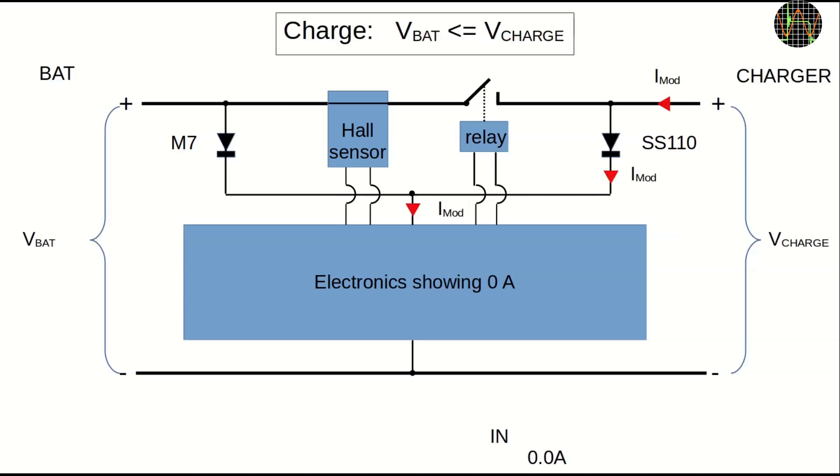In charge mode with the relay open, both the battery voltage and the charge voltage are available, but since the battery voltage is normally less than or at most equal to the charger voltage, the current flows through SS110. The module shows zero current because no current flows through the Hall effect current sensor. If the relay is closed, the current shown is the true charge current reaching the battery because the module current needed to power the electronics branches off through SS110 before reaching the current sensor, so it is not measured.